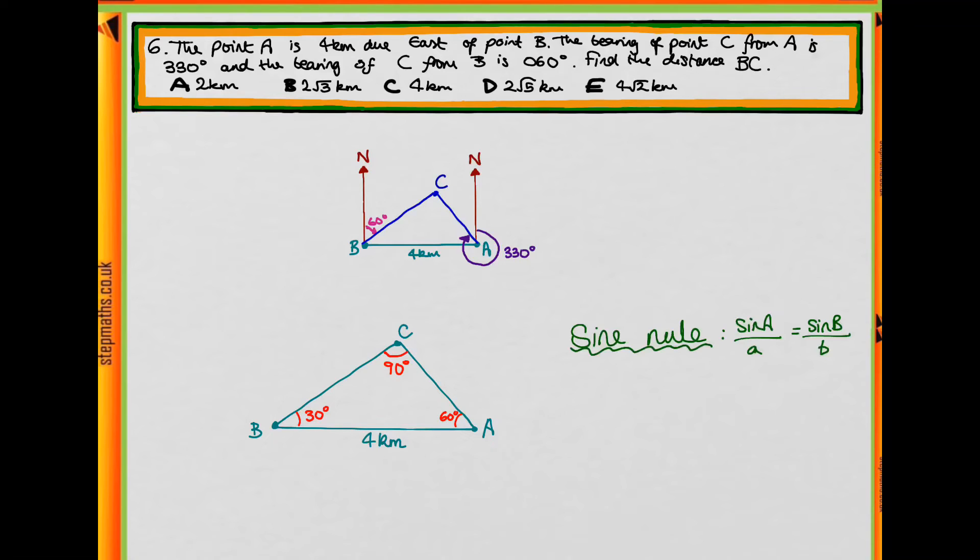Okay, so the rule you should have thought of is the sine rule. So sine A over the length of side A is equal to sine B over the length of side B. And we can call A, B, and C whichever ones we want. We've already got labels A, B, and C, but we could switch them around if that's helpful.